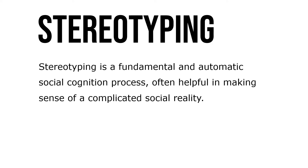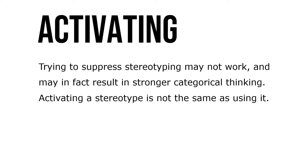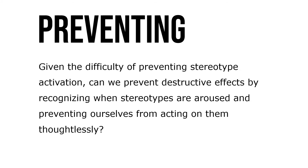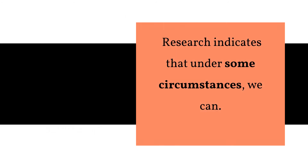Stereotyping is a fundamental and automatic social cognition process, often helpful in making sense of a complicated social reality. Trying to suppress stereotyping may not work and may in fact result in stronger categorical thinking. Activating a stereotype is not the same thing as using it. Given the difficulty of preventing stereotype activation, we can prevent destructive effects by recognizing when stereotypes are aroused and preventing ourselves from acting on them thoughtlessly — research indicates that under some circumstances we certainly can.